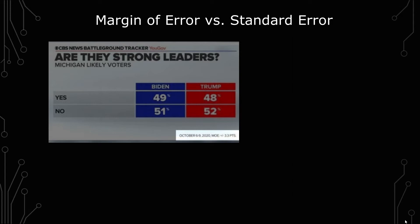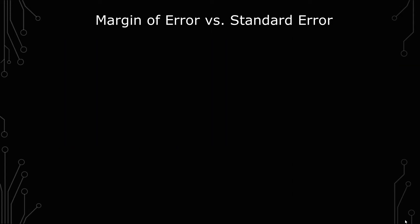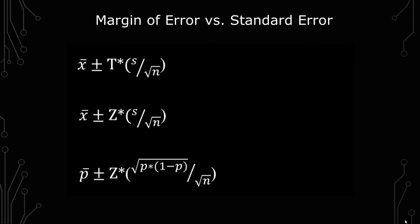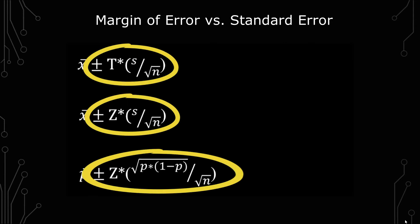The plus or minus is the margin of error. What's also the margin of error is when you do plus or minus the critical value times the standard error. That is also the margin of error.